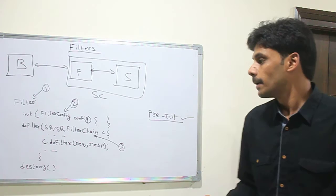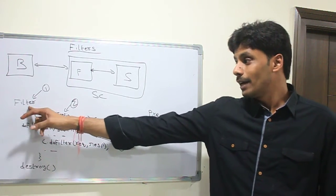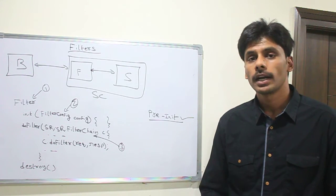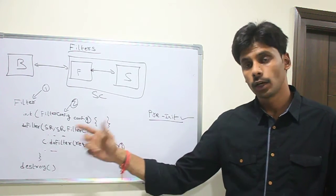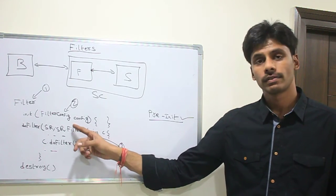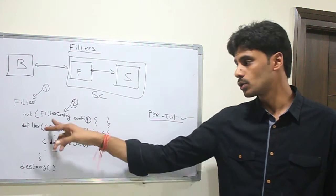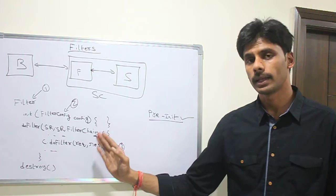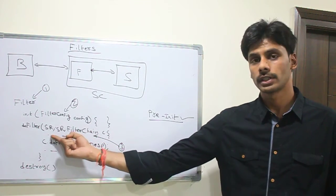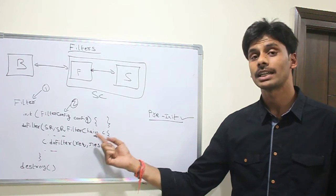To quickly summarize, the filter is the key interface in the filter API, which you need to implement, and you override the three methods: init, doFilter, and destroy. Init has filter config as a parameter, you can also use no parameter init method as well. The doFilter method has one additional parameter along with servlet request and response, that's the filter chain.